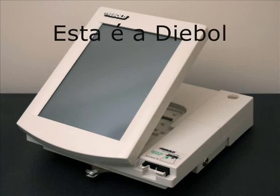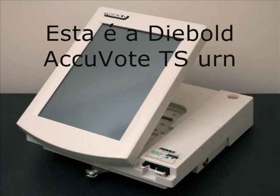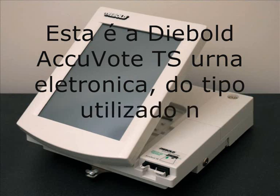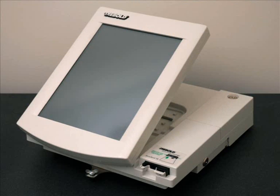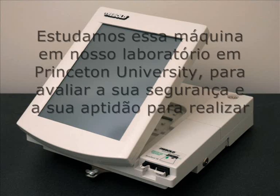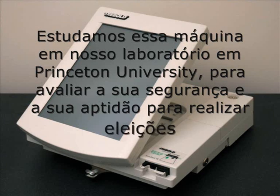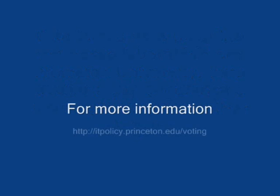This is a Diebold AccuVote TS electronic voting machine, of the type used in elections in several U.S. states. We studied this machine in our laboratory at Princeton University to evaluate its security and its suitability for conducting elections. The detailed results of our study, including a full technical paper, are available at itpolicy.princeton.edu/voting.